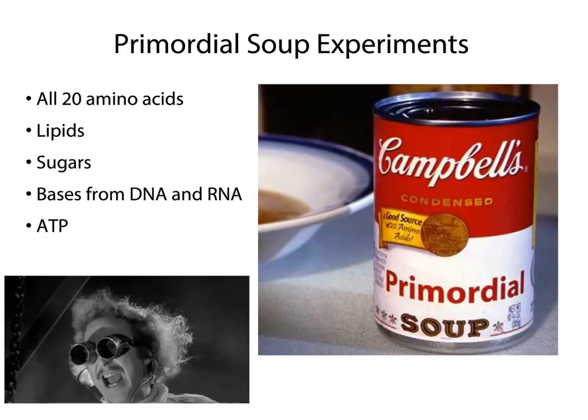They ran these experiments — called the primordial soup experiments — and re-ran them again and again. The results are awesome. He was actually able to get all 20 amino acids. They got lipids, sugars, bases for DNA and RNA, and even ATP. The earliest building blocks of life were obtained with these simple two-week experiments. Now think about what happened on early Earth over billions of years — that's incredible.